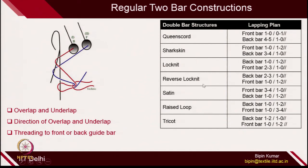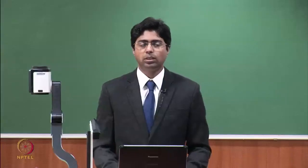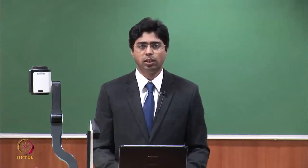You can also change the direction of the overlap and underlap. If you see the direction of the raised loop — 1, 0, 1, 2, 1, 0, 3, 4 — and compare with shark skin, the directions are the same. Only the back bar direction has been changed; in the front bar it is 1, 0, 3, 4. And in satin, it has opposite directions. Because of that, these two structures have different properties. Let's now see what are the parameters and principles on which properties can be changed in a warp knit structure.